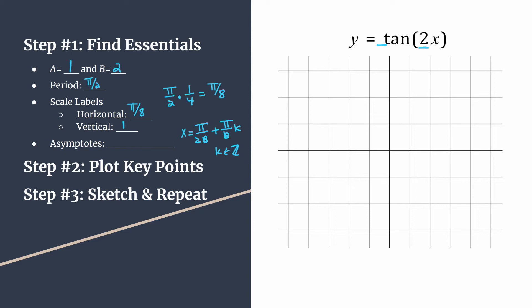Let's substitute in b. Our asymptotes for this tangent graph are x equals pi over 2 times 2, so pi over 4, plus pi over 2 times k, where k is an integer. Notice that our very first positive asymptote, substituting 0 for k, will be at pi over 4 — that should be our second tick mark. Also note that our fourth tick mark to the right of the origin should equal our period, the length of one horizontal cycle or four tick marks.